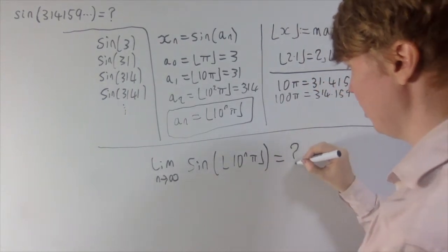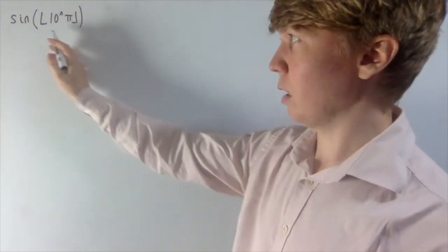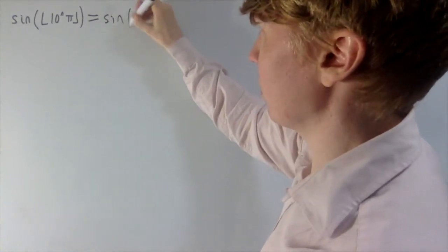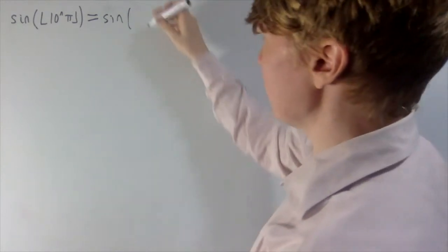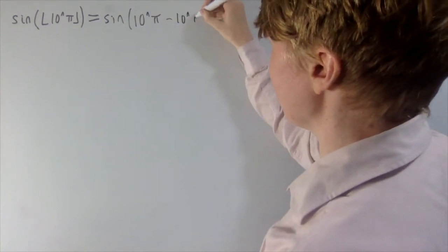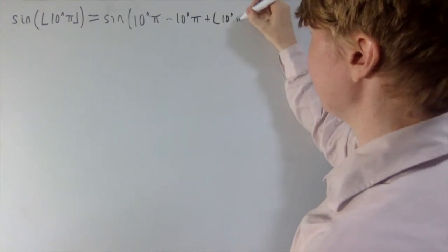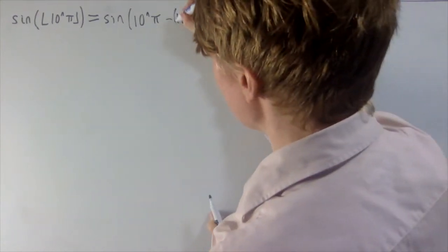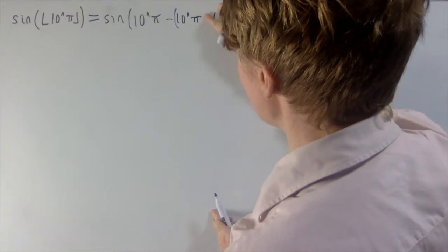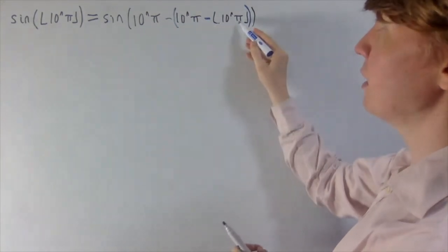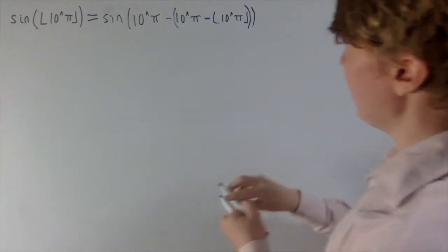Just before finding out what happens as n → ∞, I'll rewrite this in a more manageable form using the angle subtraction formula for sine. I'll write the argument as 10ⁿπ minus (10ⁿπ minus floor(10ⁿπ)), which is exactly the same expression — I've just added and subtracted the same thing. Putting the second part in brackets changes the plus sign to a minus sign, so the floor function term still cancels correctly.